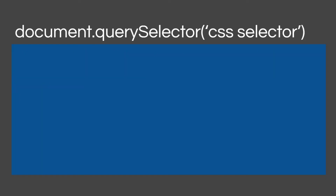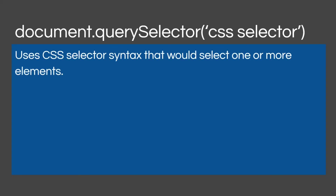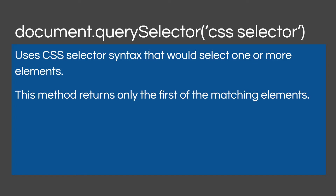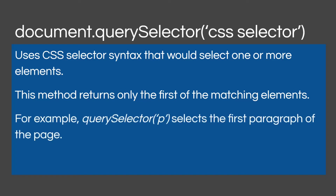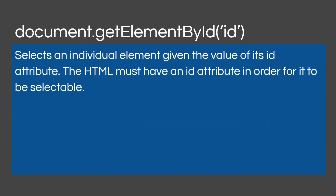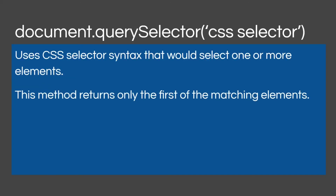We also have query selectors. Query selectors grab CSS — we use the CSS selector syntax to select one or more elements. This method returns only the first of the matching elements, not all of them. For example, `querySelector('p')` selects the first paragraph of the page. Notice the capital letters — it's important to understand that's syntactically correct and required. Look at `getElementById`: notice the capital E, capital B, and capital I. Those are required. You can't use lowercase letters; this is very strict syntax.